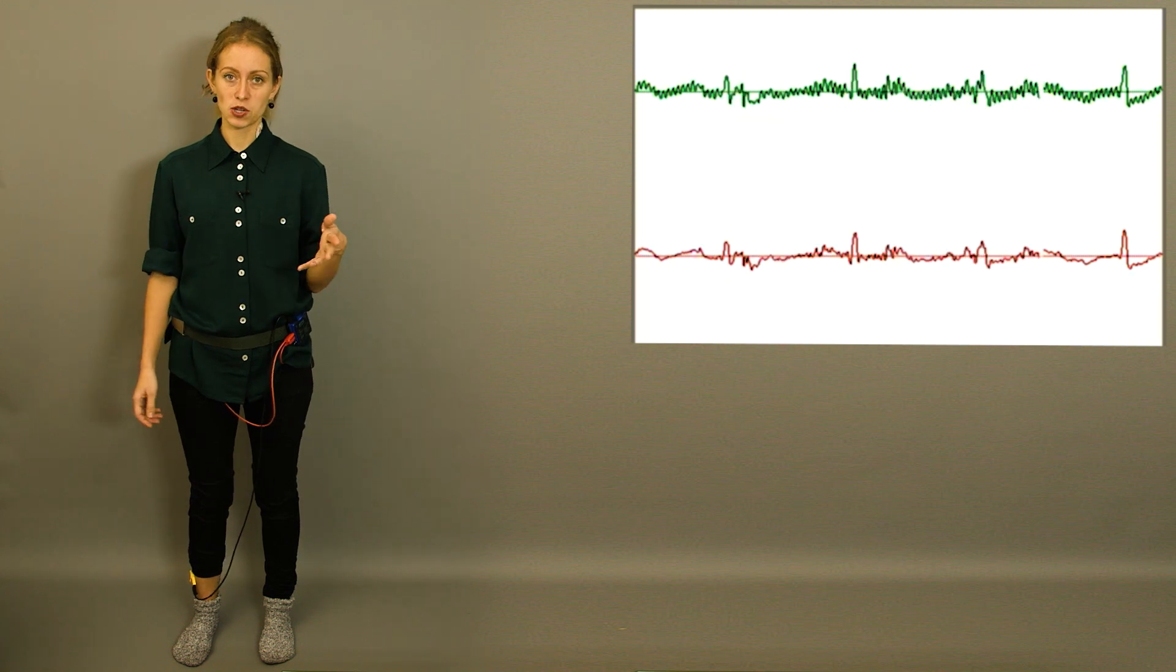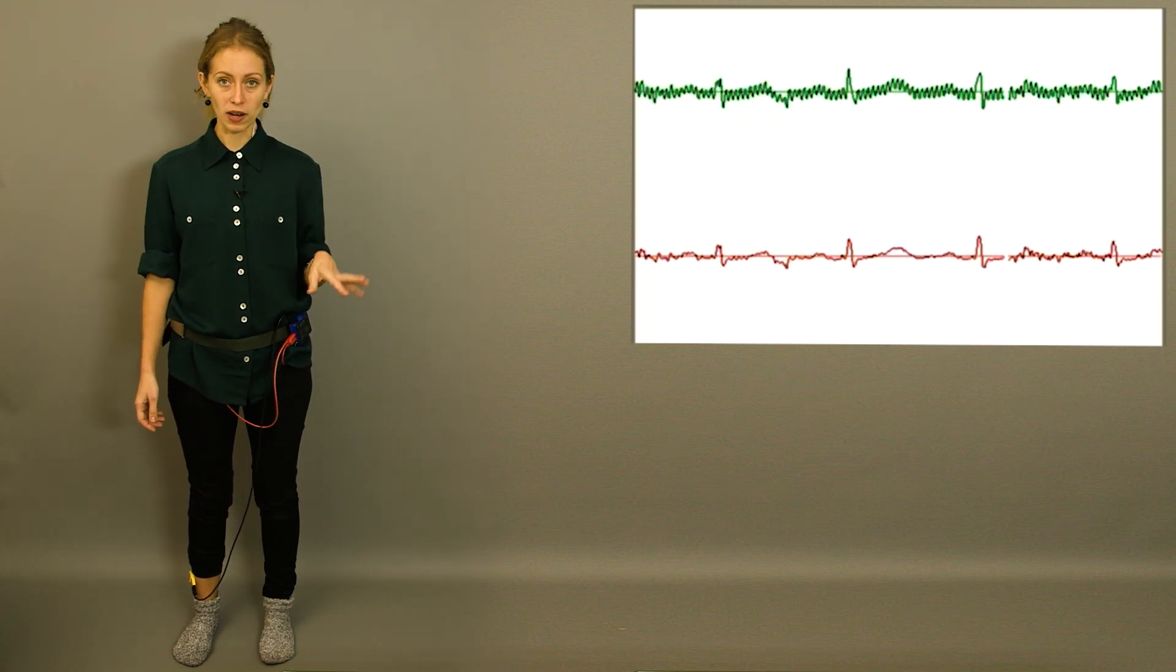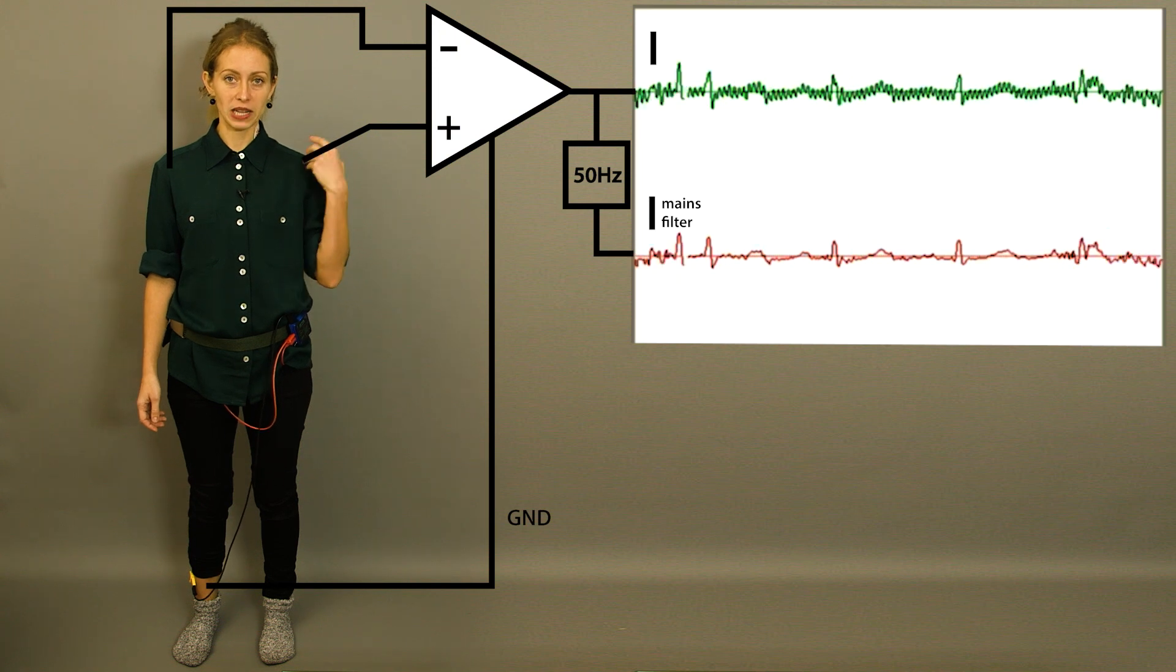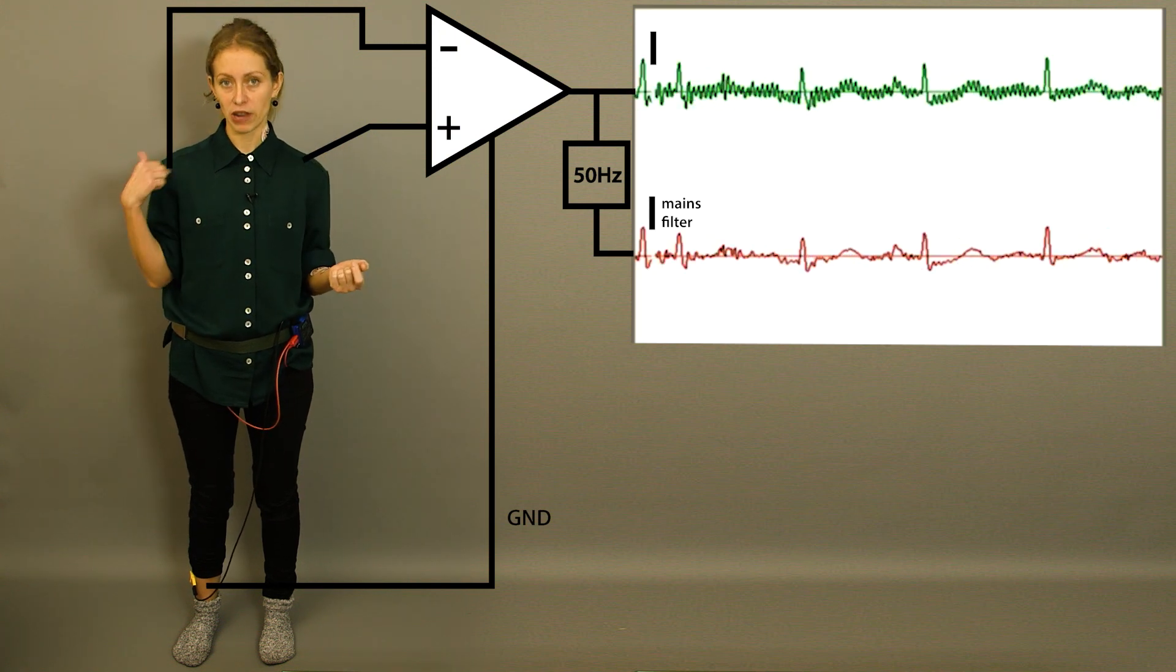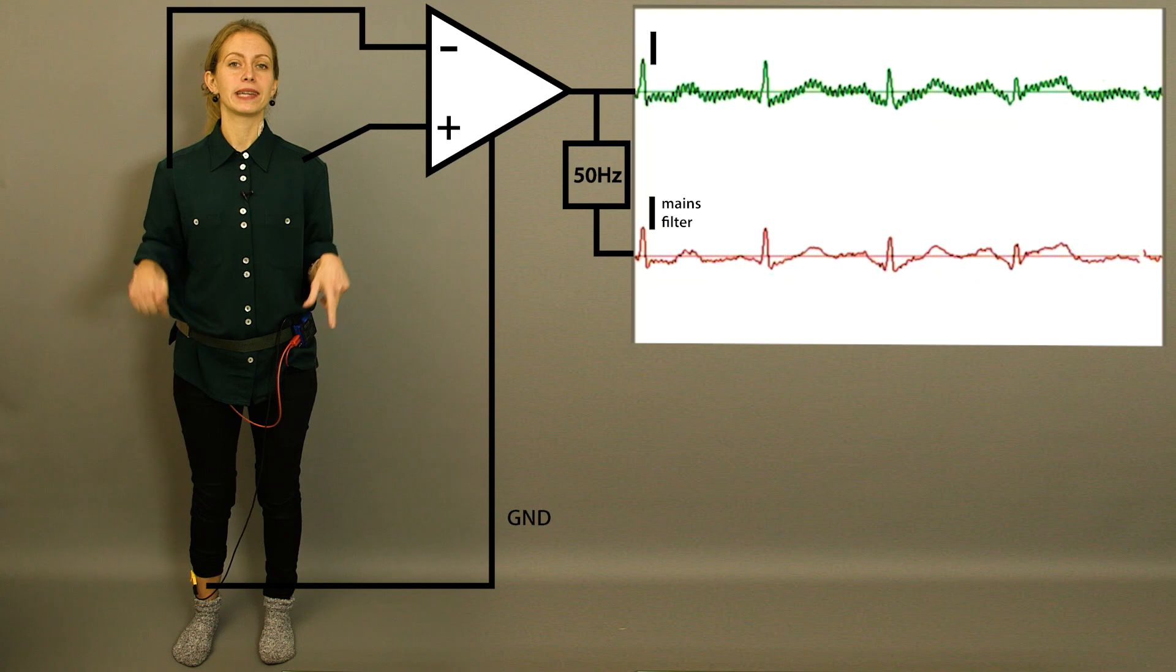Just now here on my laptop I am recording Einhoven 1 where I've got the positive input of the amplifier on my left shoulder and the negative input on my right shoulder and ground is connected to my right leg.